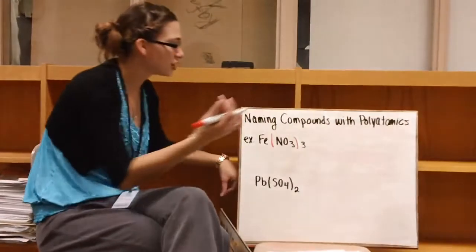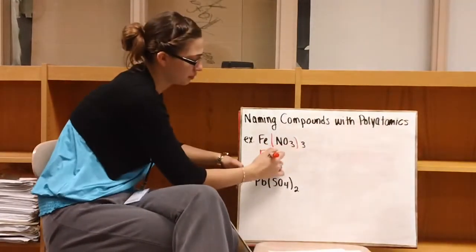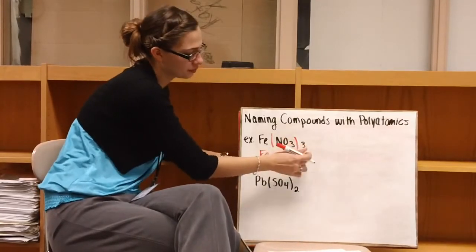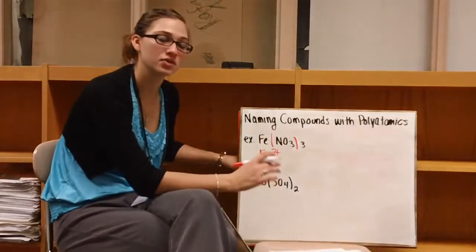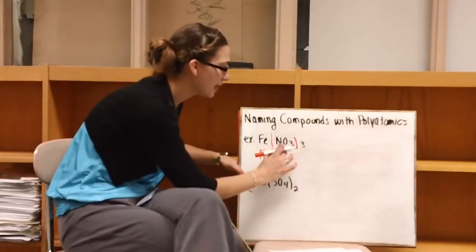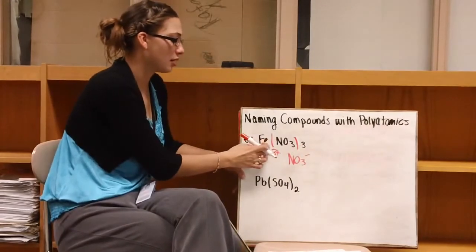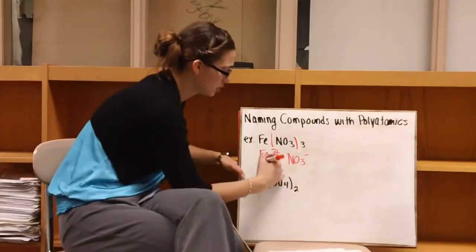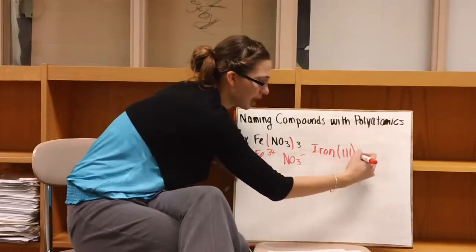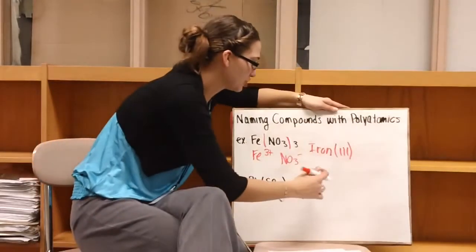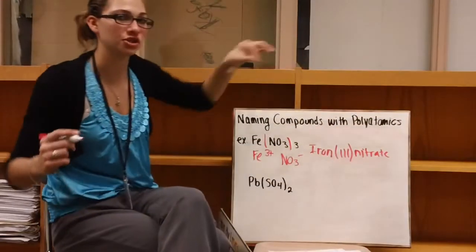So now in order to name this, the first thing that I would do is split it up into our different ions, like we did previously. So we know that we have iron, and since the subscript for our polyatomic ion is three, we know that our charge for iron is 3+. We're still going to be using the crisscross method here. And then we have NO3, which is NO3-, since iron has a subscript of just one. So we know this is iron. We know that we have to use our Roman numeral here, because iron is one of those transition metals. And NO3 is nitrate. So we have iron(III) nitrate.